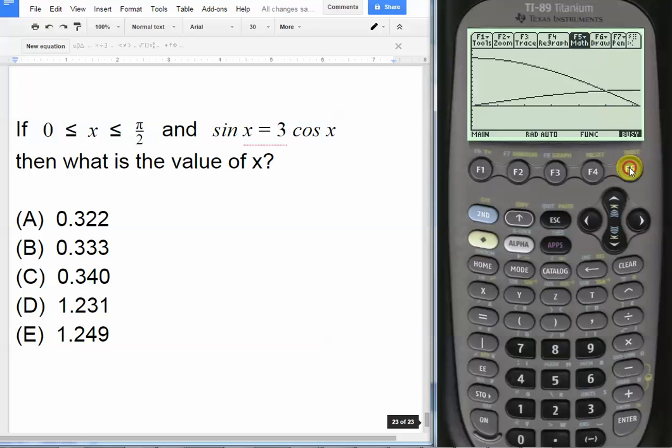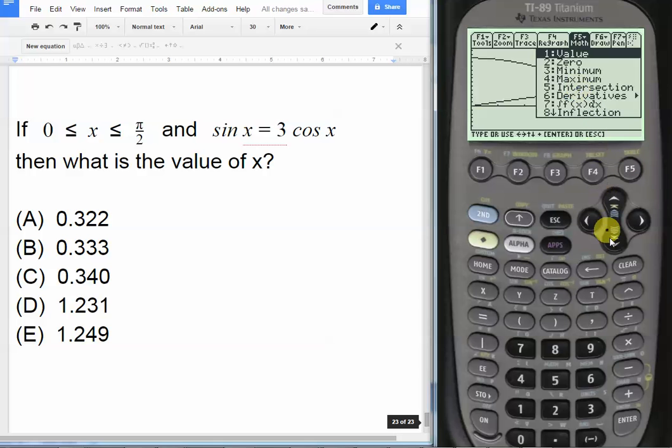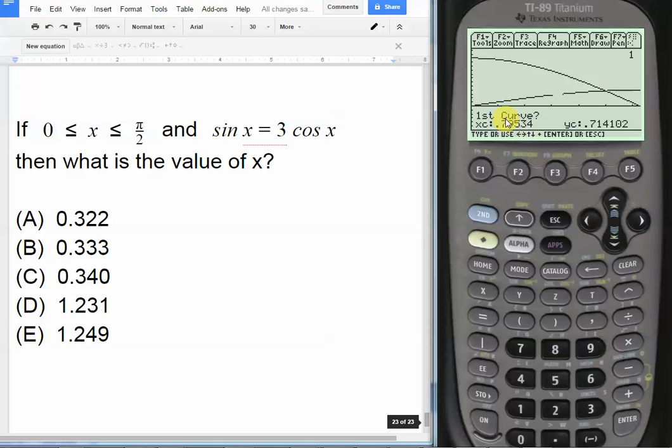We're going to hit F5 for math, scroll down to number 5 which is intersection, and hit enter. They're going to ask which is the first curve, we're right here, enter. This is the second curve, let's hit enter. What's the lower bound? We want to go to the left of the intersection point which is where we are, so let's hit enter. Now the upper bound, meaning to the right of the intersection point. Let's scroll all the way over, make sure we're past it.